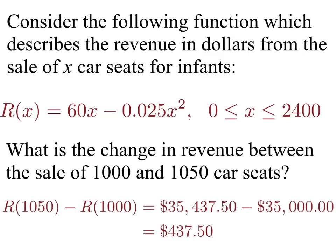And so if we think about that, that's R of 1050 minus R of 1000 because that's going to give me the revenue generated for 1050 car seats and 1000 car seats. Turns out to be $35,437.50 minus $35,000.00. And so the additional revenue generated is $437.50.